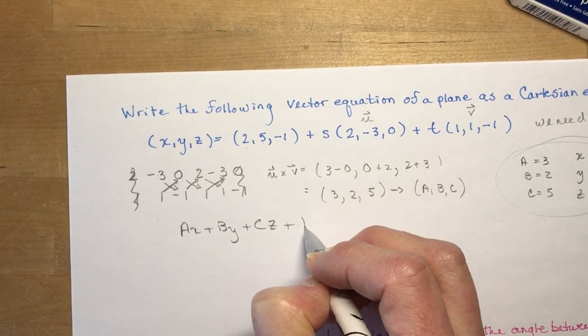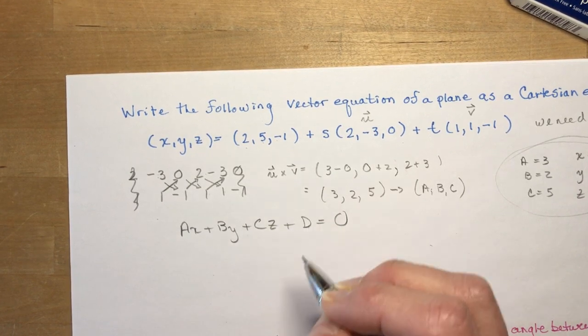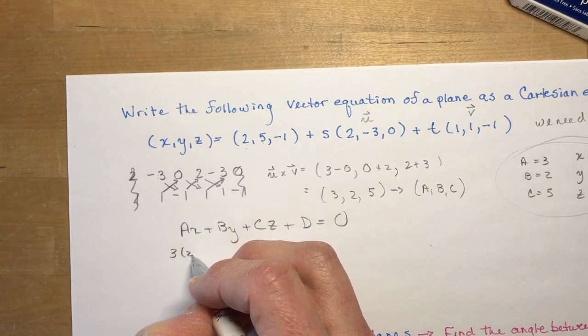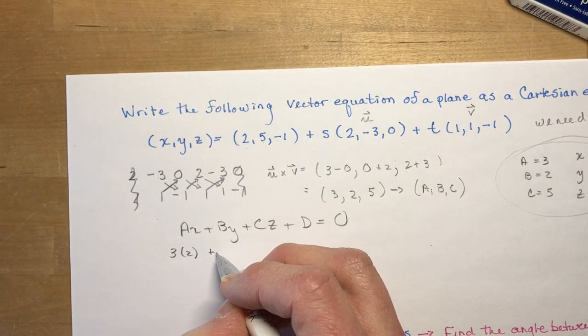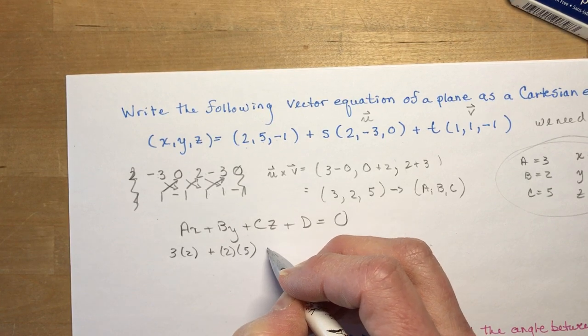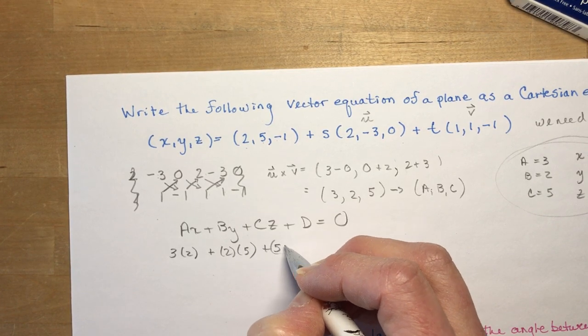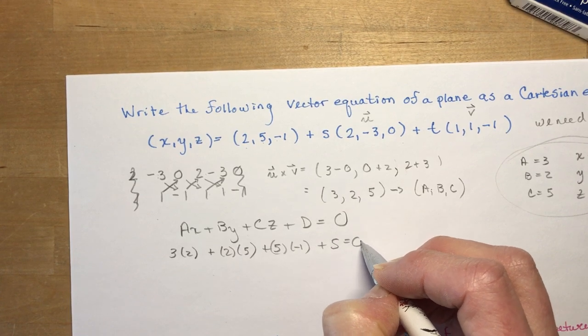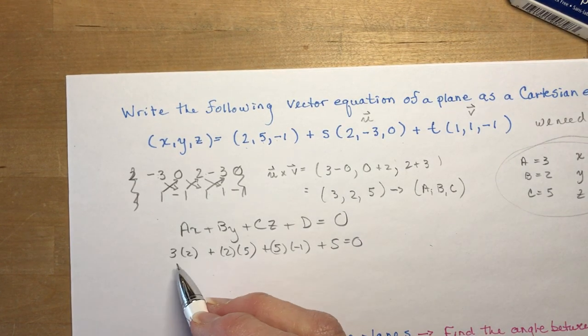So now I write out A, X plus B, Y plus C, Z plus D is equal to 0. Remember you're trying to find D. So I have 3 times 2, plus 2 times 5, plus 5 times negative 1, plus D equals 0.